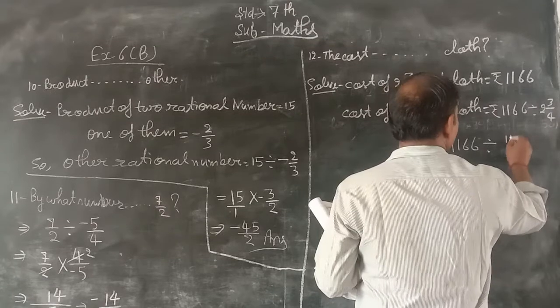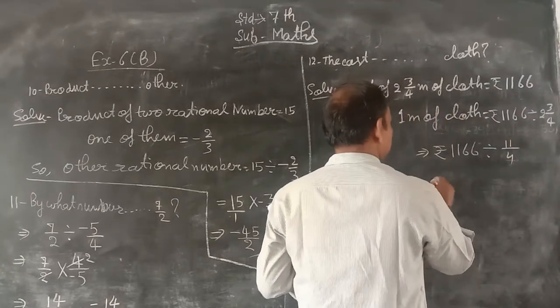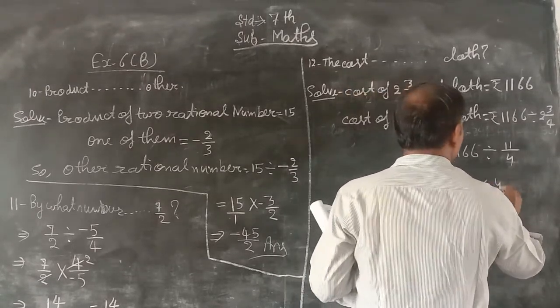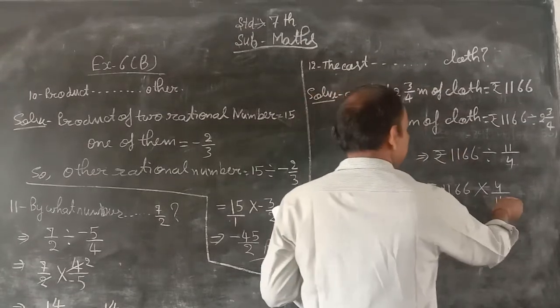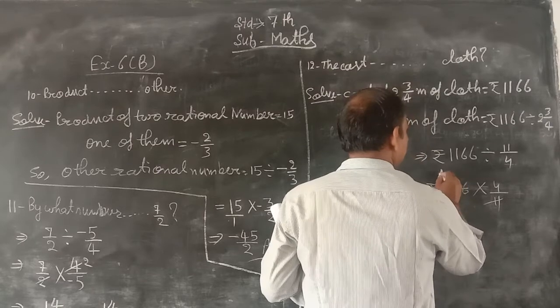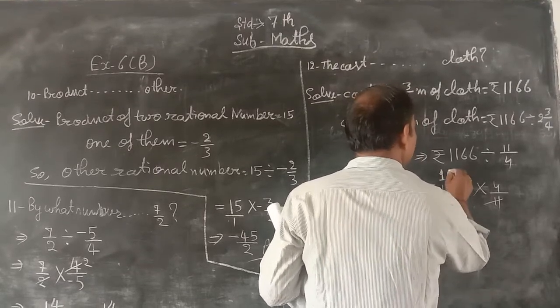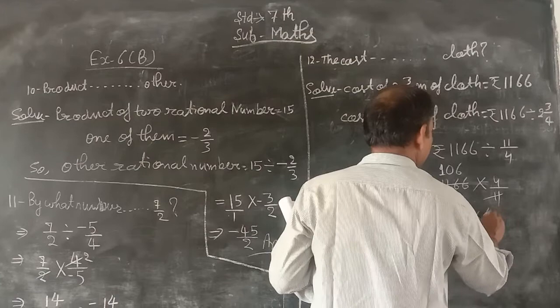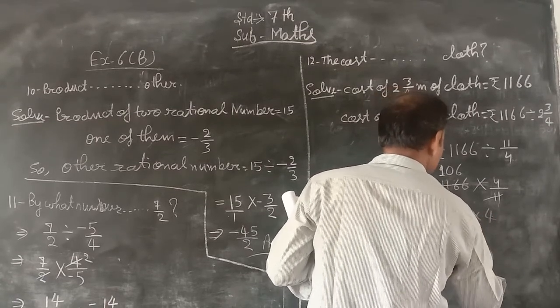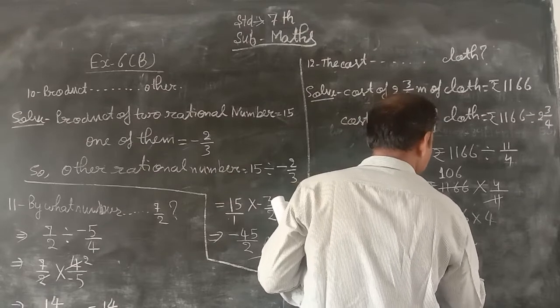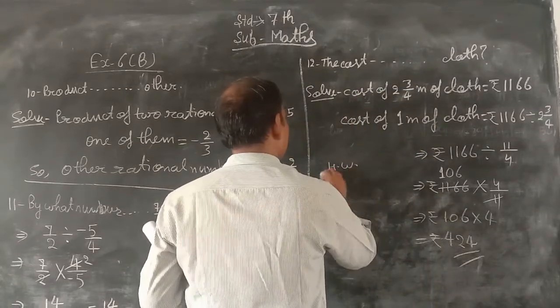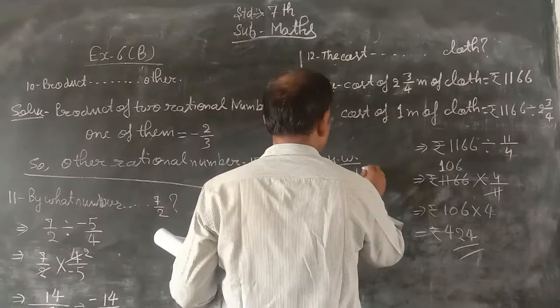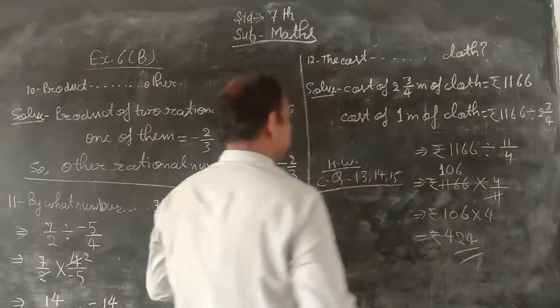1166 divided by 2 and 3 upon 4. First convert the mixed number: 2 and 3 upon 4 equals 11 upon 4. Now performing the division: 1166 divided by 11 upon 4. Using long division, 11 goes into 116 ten times with remainder 6, bringing down gives 66, which is 6 times 11 exactly. So 1166 divided by 11 equals 106. Then 106 multiplied by 4 equals 424.